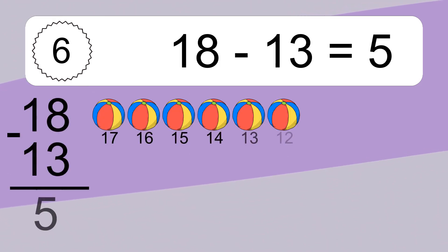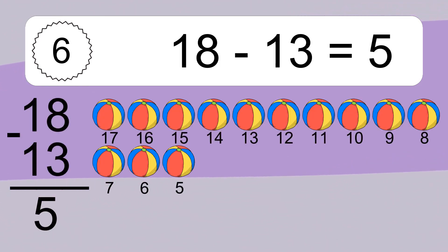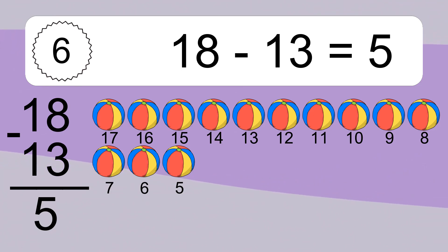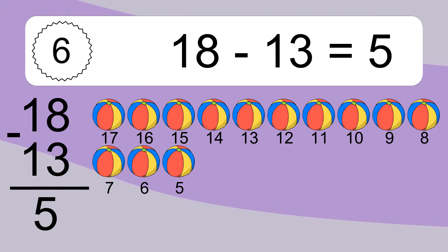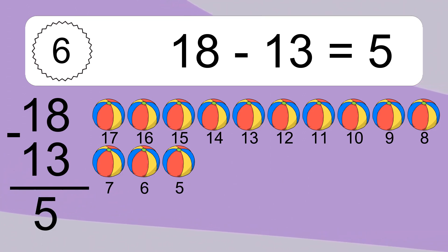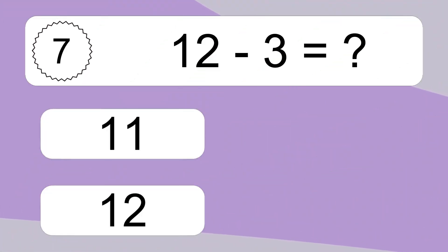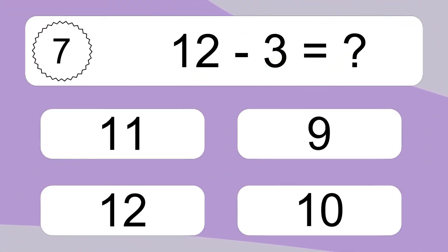18 minus 13 equals what? 18 minus 13 equals 5. Let's count it. 17, 16, 15, 14, 13, 12, 11, 10, 9, 8, 7, 6, 5. 12 minus 3 equals what?